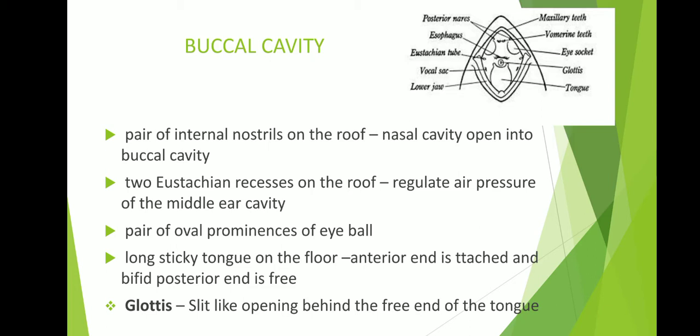The next structure seen in the buccal cavity is the eustachian openings. On the roof of the buccal cavity, we can see two eustachian openings, one on each side. They are the openings from the middle ear to the pharynx. Their function is to regulate the air pressure of the middle ear cavity.